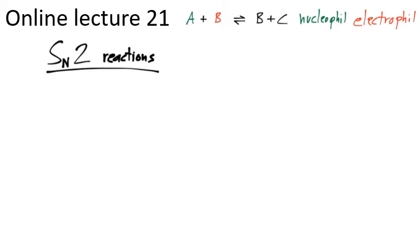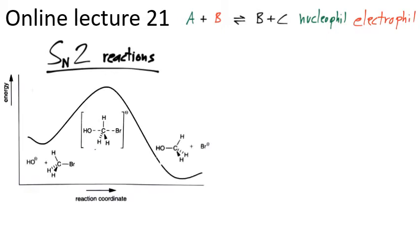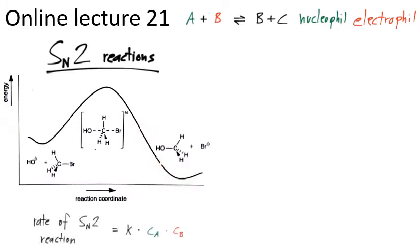We defined an SN2 reaction as a single-step reaction where both the nucleophile and the electrophile, a halogeno alkane, react together via a transition state to form the products. Since both reactants need to meet for the reaction to take place, the rate of this SN2 reaction depends on both the concentration of the nucleophile and the concentration of the electrophile, times the rate constant.